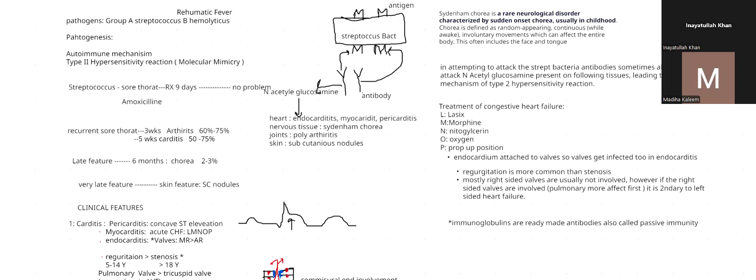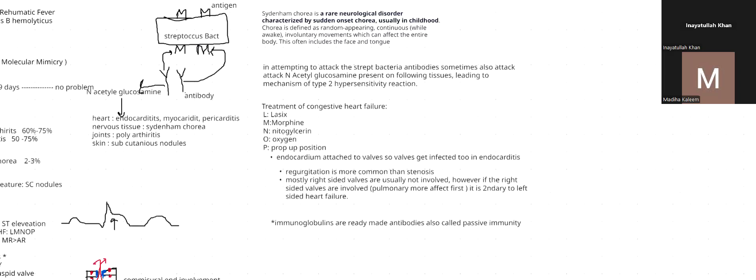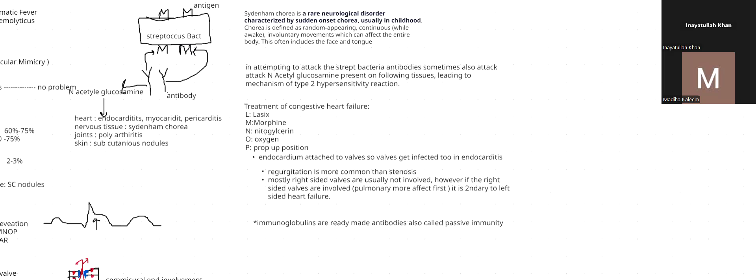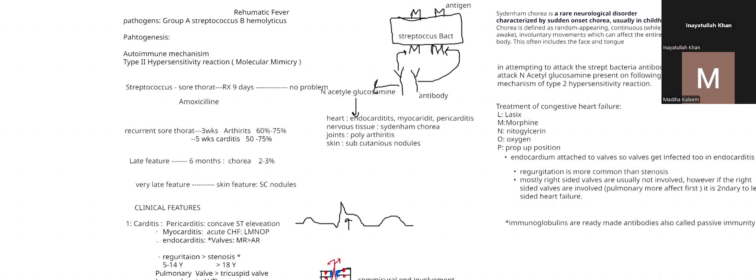When Streptococcus enters the body, it initially causes a sore throat. If we treat the sore throat within nine days with an antibiotic like amoxicillin, the Streptococcus gets treated and we don't have any autoimmune reaction.